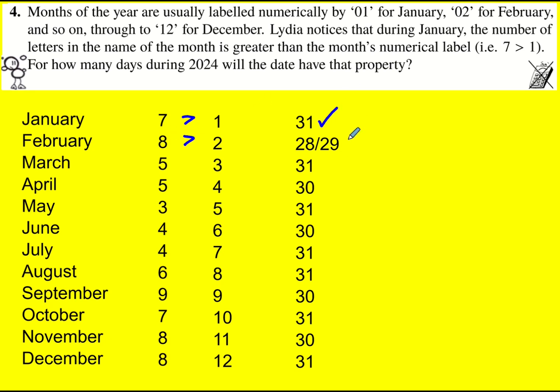February: we see that 8 is greater than 2, so 28 to 29 days. Now because this is 2024 it is a leap year. If the year is divisible by 4 then it's a leap year, except for some exceptions such as the year 2000. For the next significant number of years it will always be a leap year when the year is a multiple of 4.